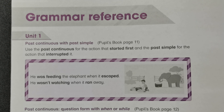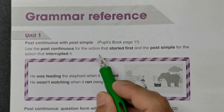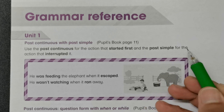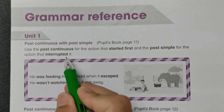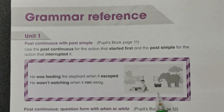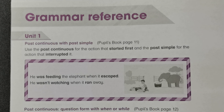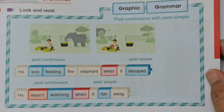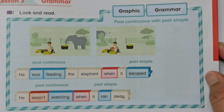You can refer to page 11 of the pupils book. Basically, the usage is: use the past continuous for the action that started first, and the past simple for the action that interrupted it. This is not as colorful as compared to your pupils book.